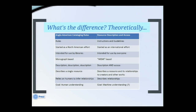What's the difference between AACR2 and RDA on a theoretical level? AACR2 is about rules — it's there in the name. It was started as a North American effort, intended for use by libraries. When AACR was originally developed, they were working with monographs — single books. It is all about description: describing the item in front of you, describing a single resource. It relies on humans to infer relationships, and its ultimate goal is human understanding.